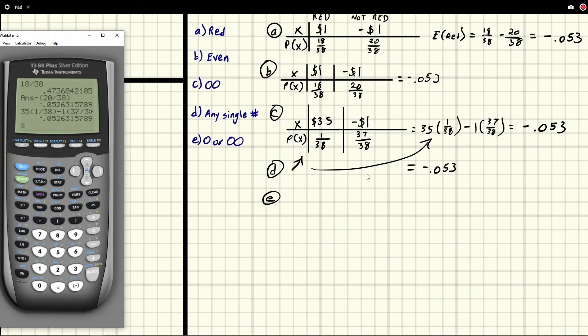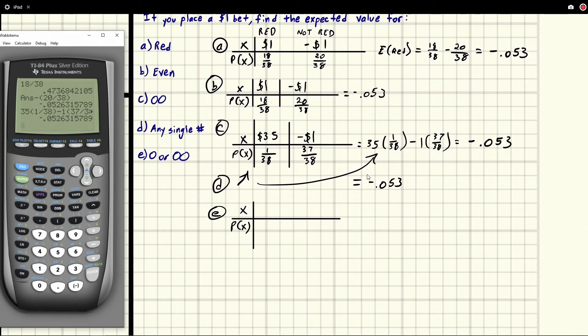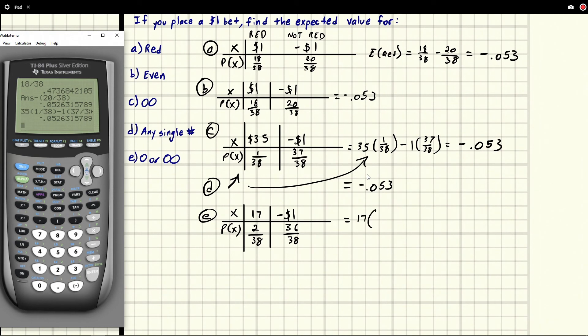And let's go to E. Zero or double zero. Okay, zero double zero, this one looks different. Maybe we'll finally get the one that's different. Let's see. X, probability of X. Zero or double zero has a payoff of $17. So we're going to do, okay, well if we get it we make $17. And zero double zero, that's two spots. So there's 2 out of 38 ways to do this. And if we then go to the next one, well we lose a dollar if we don't do it. And since we use two spots for the winning, that means the other 36 spots have to be losing spots.